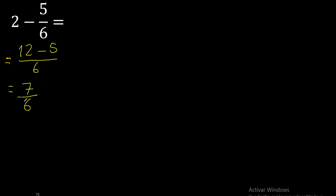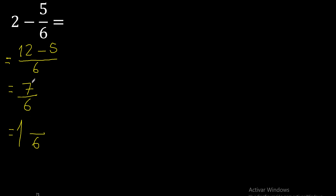7 is the result, but since 7 is greater than 6, we write it as a mixed fraction. 6 multiplied by which number is nearest to 7 but not greater? 6 multiplied by 2 is 12, which is greater. 6 multiplied by 1 is 6, which is not greater. So 7 minus 6 is 1.